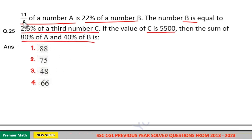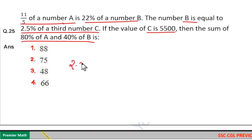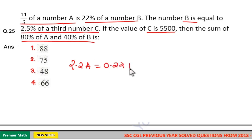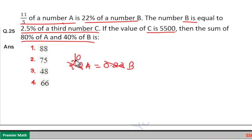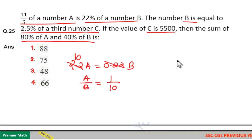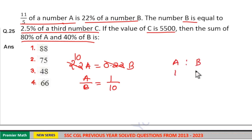Here 11 by 5 means 2.2. So 2.2 of A is equal to 22 percentage of B. 22 percentage means 22 by 100, that is 0.22 of B. Now 0.22 goes 10 times in 2.2. So A by B ratio is equal to 1 by 10 — that is if A is 1 part then B is 10 part.